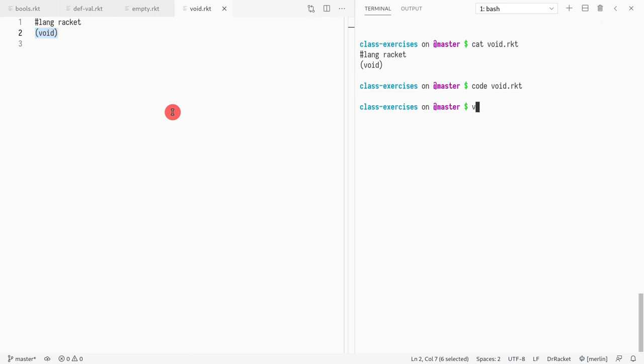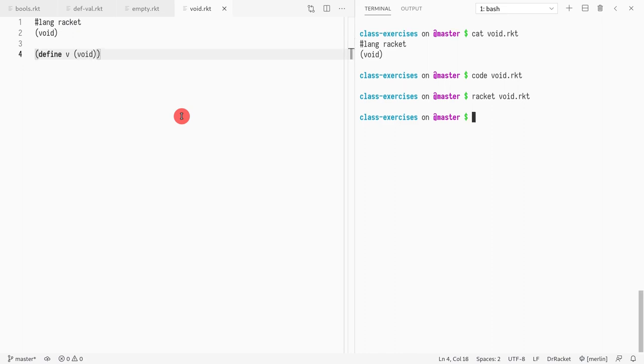This is an empty program, which is equivalent to calling void. And I have another program here, which is void. So the special function void, when called returns nothing, but nothing is a value. So if I do racket void, it prints the same thing, which is nothing. But more importantly, I can do define V and define V is void. And that also works.